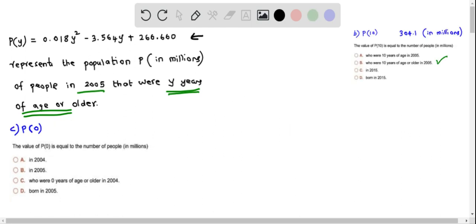Let's answer part c. In part c we have to first determine p of 0. So we replace y by 0 into the population equation. So therefore p of 0 equals 0.018 times y square which is 0 square minus 3.564 times 0 plus 266.660.